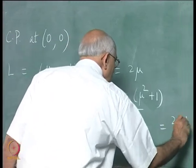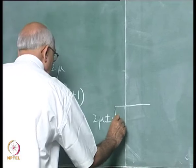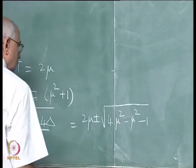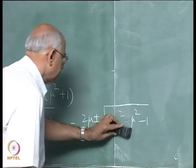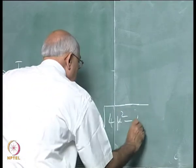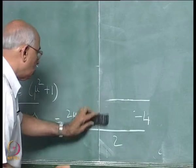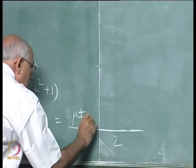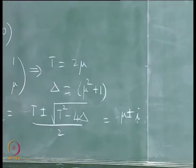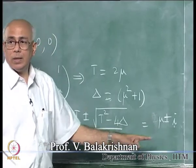Working through the algebra, this simplifies to 2 mu plus or minus i, giving a pair of complex conjugate eigenvalues. Depending on the sign of mu, since it is a complex conjugate pair, the critical point is a spiral point. This immediately says that it is an asymptotically stable spiral for mu less than 0 and an unstable spiral for mu greater than 0 at the origin.